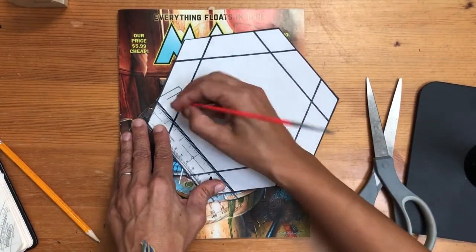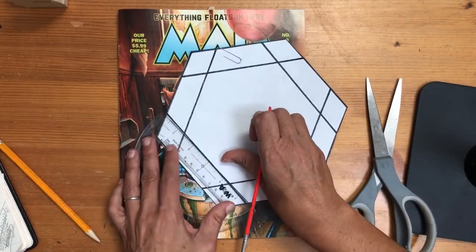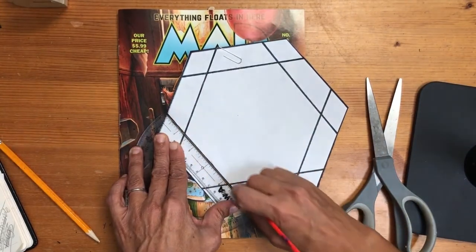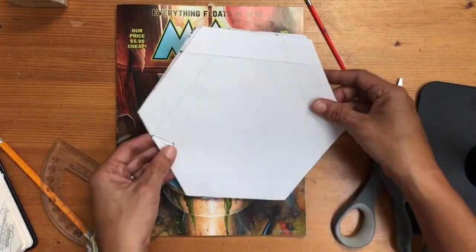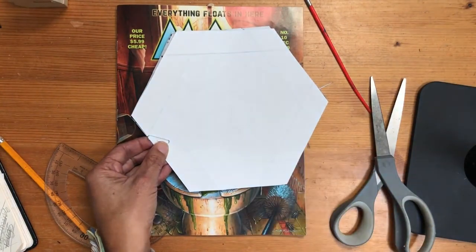You'll go all the way around. And when you're done, you should see the indentation scored onto the colored paper.